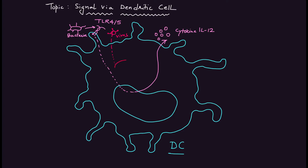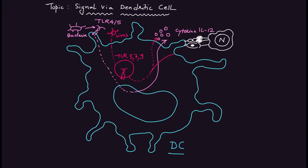For the viral pathway, viruses are detected by toll-like receptors 3, 7, and 9. Via the nucleus, the cellular signaling produces interleukin-12 as well as MHC molecules, which process the viral antigenic parts and activate naive T-cells. The naive T-cell then differentiates into the Th1 subtype, further releasing interferon-gamma, which is highly important in antiviral immune response.